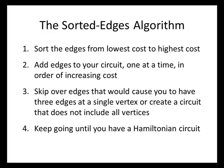The sorted edges algorithm works like this. First, we're going to sort the edges from lowest cost to highest cost. Then we're going to add the edges to our circuit one at a time in order of increasing cost — starting with the cheapest edge and going all the way up to the most expensive — unless adding an edge would cause three edges to meet at a single vertex or create a circuit that doesn't include all the vertices. If we see an edge like that, we skip it. We keep doing that until we have a Hamiltonian circuit, even if there are other edges left over at the end.